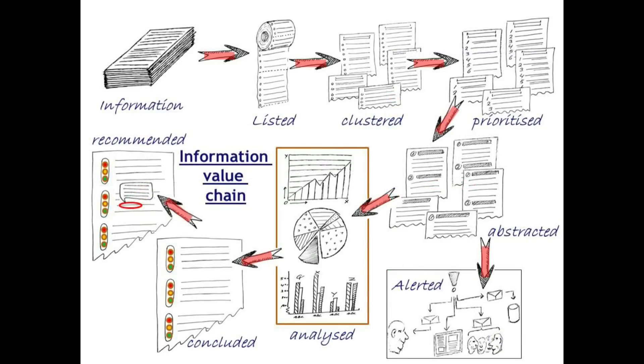If you now go to the total slide of the information value chain and you go from the normal pile of information to a list, to clustered, prioritized, abstracted, and then you make the side step to alerted and analyzed, concluded, and finally recommended. First of all, the moment you start to analyze material, it diverts away from being just information. Even when it is enriched and much more useful, it becomes intelligence. Then it still remains intelligence, even when you bring in conclusions, because that is still general.